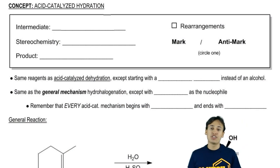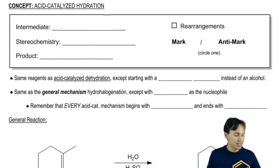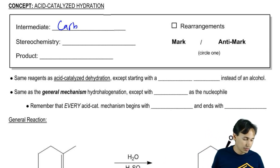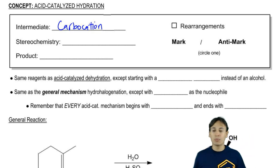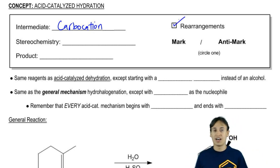Acid-catalyzed hydration is more similar than it is different to the addition reactions that we've learned so far. The intermediate is the same as the ones that we've seen so far, which is that it is a carbocation. If the intermediate is a carbocation, what do you think that says about its ability to do shifts or rearrangements? Totally. This thing is going to rearrange all the time.